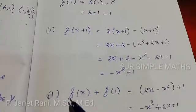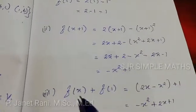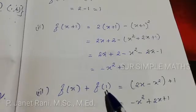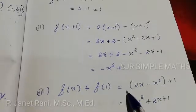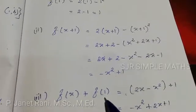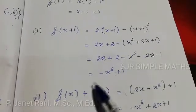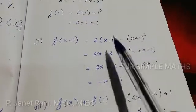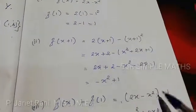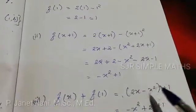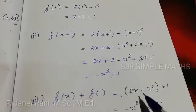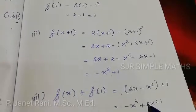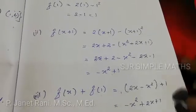Third part: f(x) + f(1). f(x) = 2x - x² and f(1) = 1. So f(x) + f(1) = 2x - x² + 1, which equals -x² + 2x + 1.